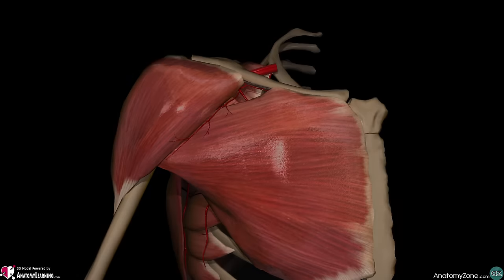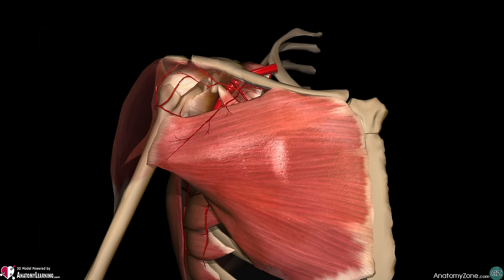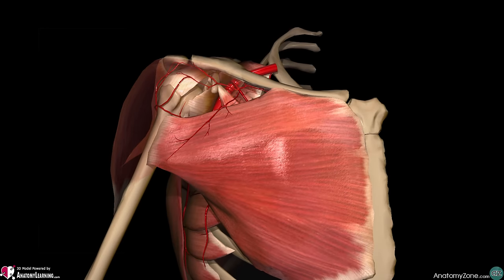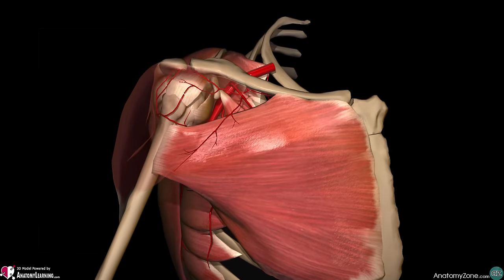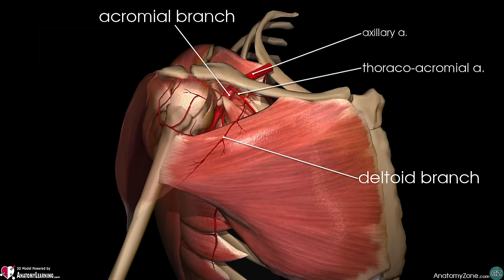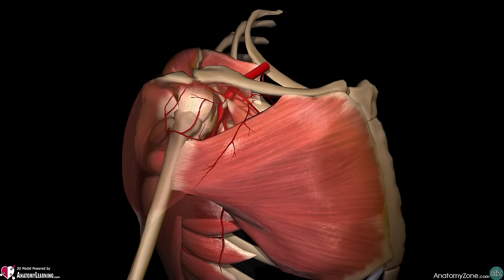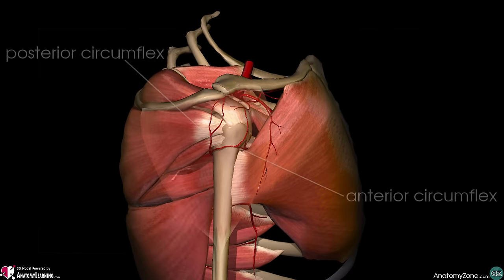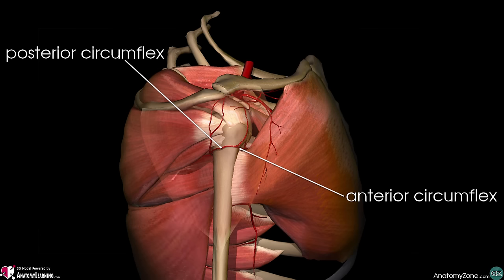The deltoid muscle receives its arterial supply via the acromial and deltoid branches of the thoracoacromial artery and the anterior and posterior circumflex humeral arteries. It also receives supply from the subscapular artery and the deltoid branch of the profunda brachii.